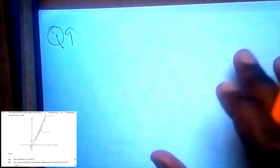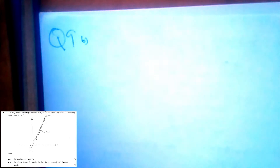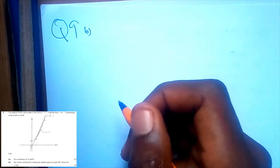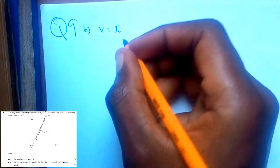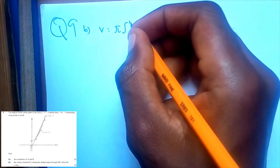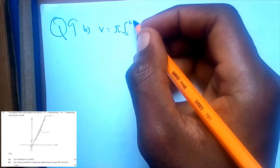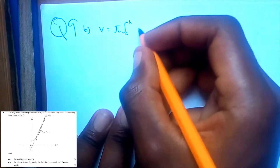For question 9b: volume obtained by rotating the shaded region through 360 degrees about the x-axis. When they say about the x-axis, it means you use the x-values to find its volume. Volume is equal to pi times the integral from a to b, where these are the x-coordinates, of y squared dx.